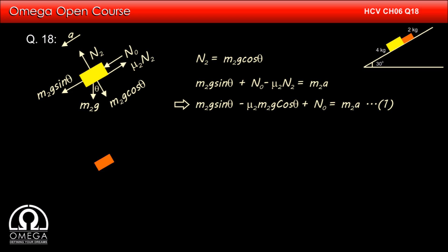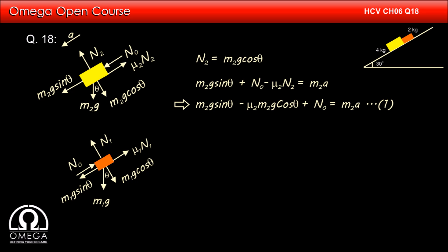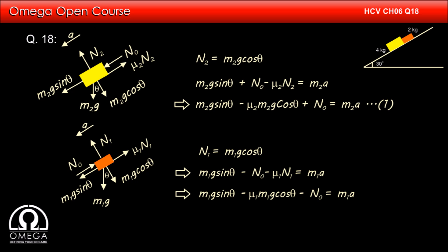Now let us draw the free body diagram of the 2 kg block. Gravitational force M1g acts vertically downward. The component of gravity along the incline is M1g sin theta and perpendicular is M1g cos theta. The incline exerts normal force N1 and friction mu1·N1 acts up the incline. The reaction N0 acts on the 2 kg block up the incline. Balancing perpendicular forces: N1 = M1g cos theta. The equation of motion down the incline gives: M1g sin theta − N0 − mu1·M1g cos theta = M1·a. This is equation 2.